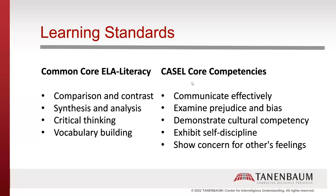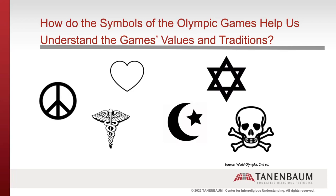Today's first lesson uses symbols to explore the values of the Olympic Games. Examining symbols helps students recognize the different ways individuals, institutions, and traditions express their values. It also allows students to connect the values of the Olympics to the values that they're familiar with. This lesson begins by asking students to look at some of the symbols that are represented on the slide. Do you recognize any of the symbols shown here? Put your answers in the chat.